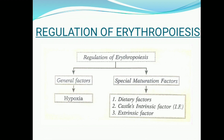The regulation of erythropoiesis includes general factors and special maturation factors. For exam purposes, questions may ask you to describe the stages of erythropoiesis or describe erythropoiesis broadly — write the complete answer regardless of the marks. General factors involve hypoxia; special maturation factors involve dietary factors, Castle's intrinsic factor, and extrinsic factors.